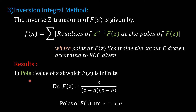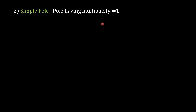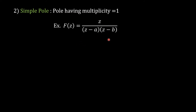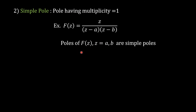This pole is distinguished as a simple pole and a multiple pole. A simple pole is a pole having multiplicity 1. For example, in the previous example F(Z) equal to Z upon (Z minus A) into (Z minus B), A and B are the poles and they appear only once in the denominator. Hence their multiplicity is equal to 1, because of which Z equal to A and Z equal to B are called simple poles.